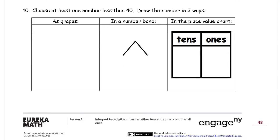Choose at least one number less than 40. Draw the number in three ways. Okay, so I'm going to choose a number. I'll put it in the place value chart first. And I'm going to pick the number, I always pick the number 37. So that's three tens, seven ones. So I'm going to draw as grapes.